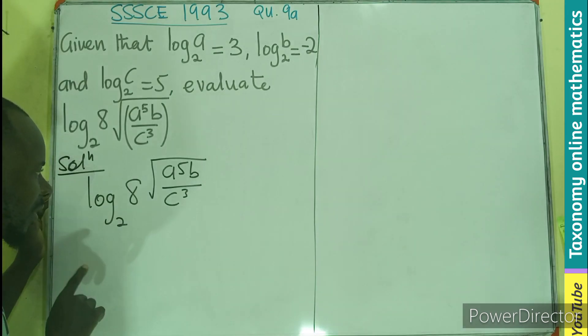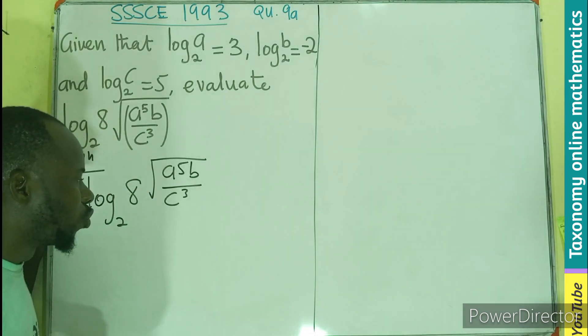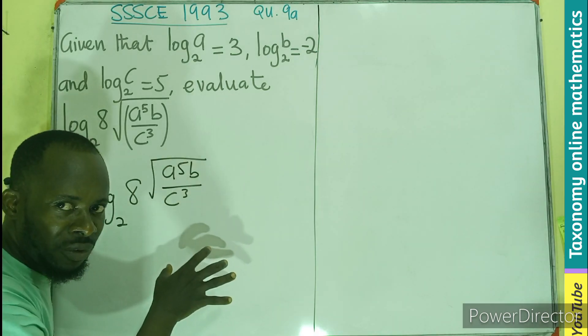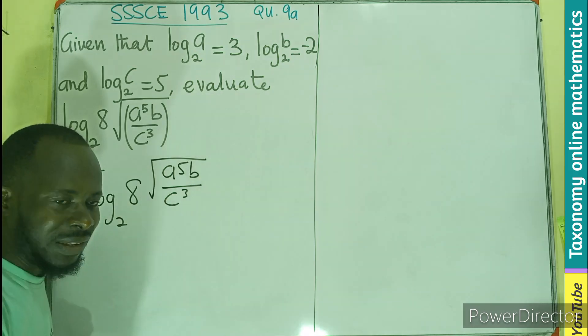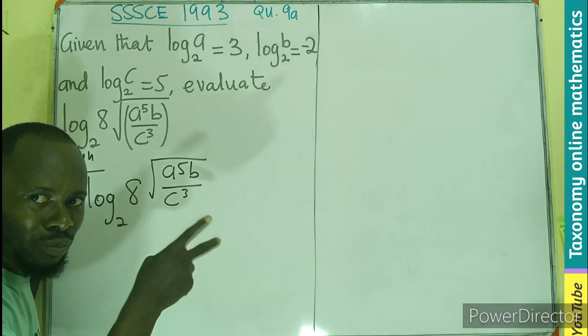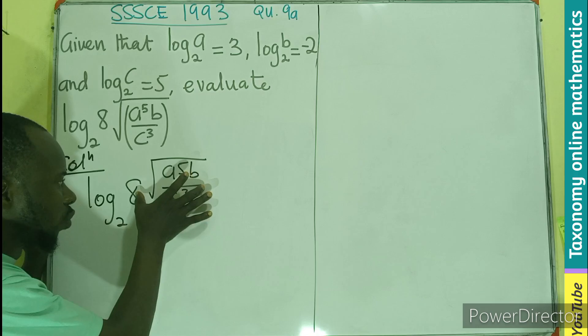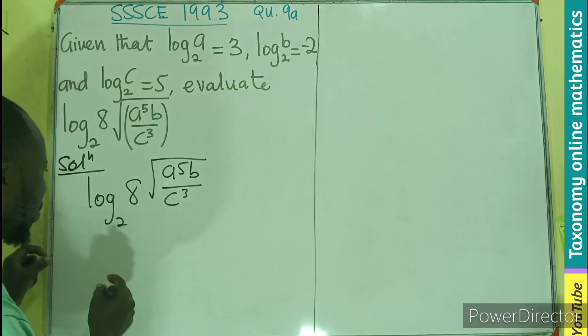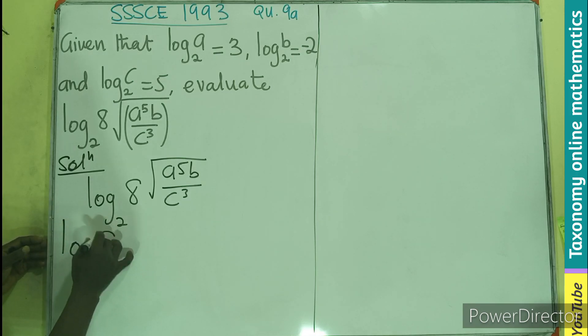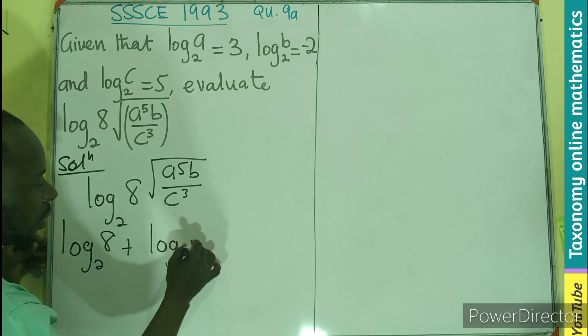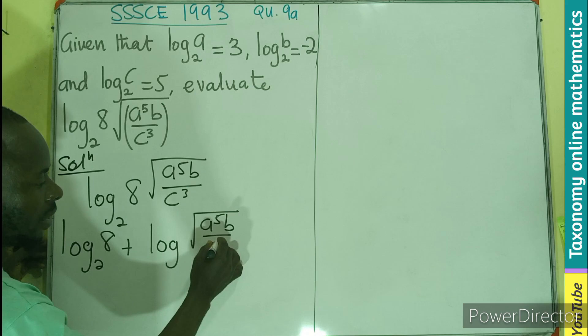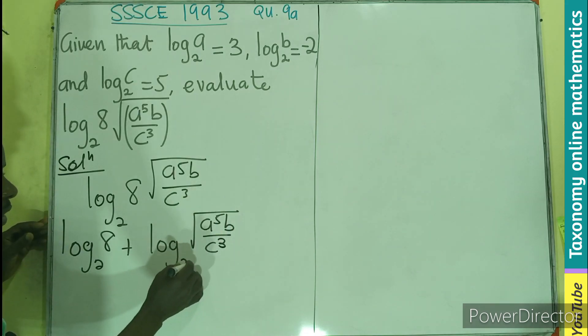Alright, first thing, in the first method, what we are going to do is that we know that this is 8 times the root of the product of A and B divided by C. If that is the case, multiplication is addition. We are going to separate this in terms of that addition, meaning I'll be having the log of 8 base 2 plus the log of the root of A to the power 5 B, C to the power 3, to the base 2.